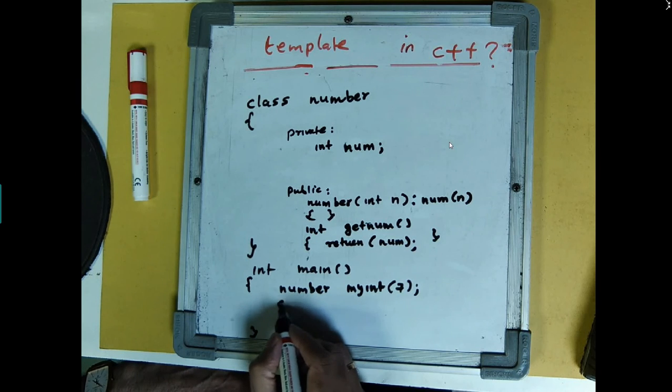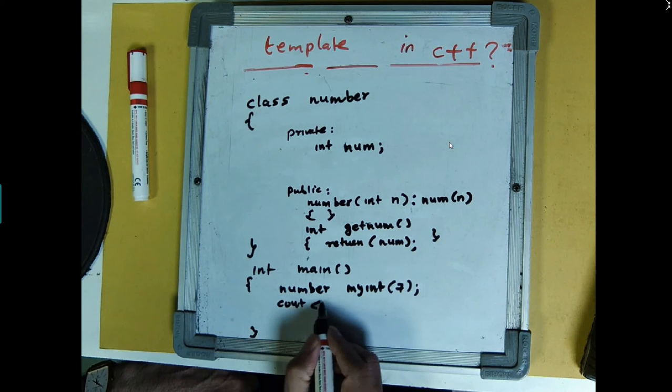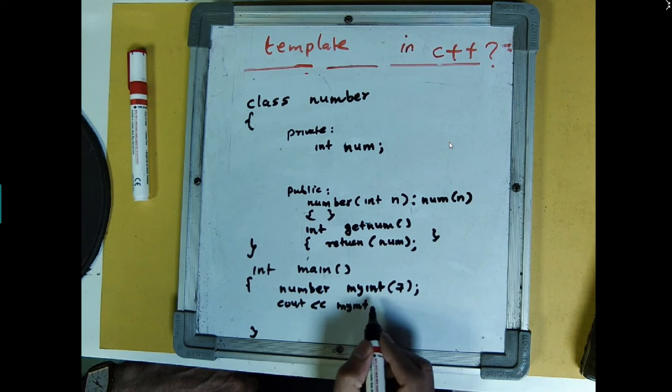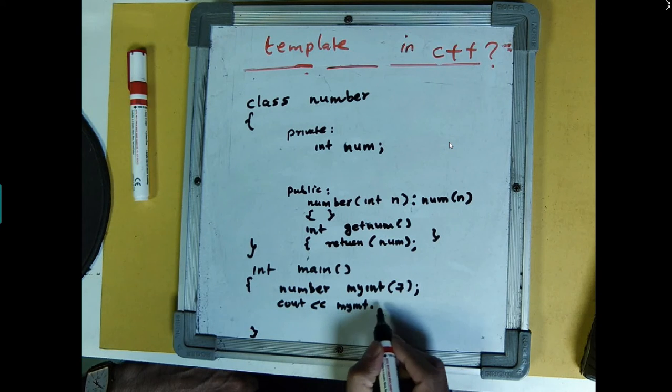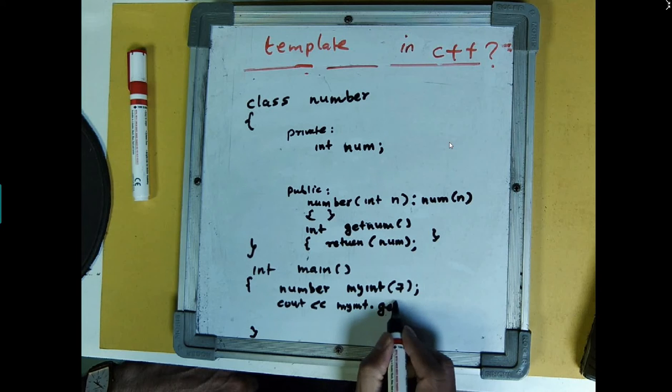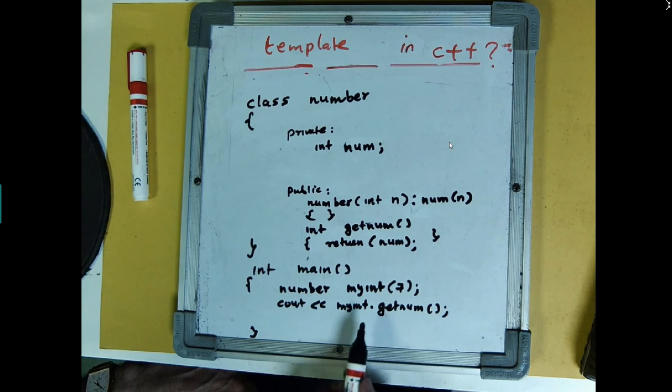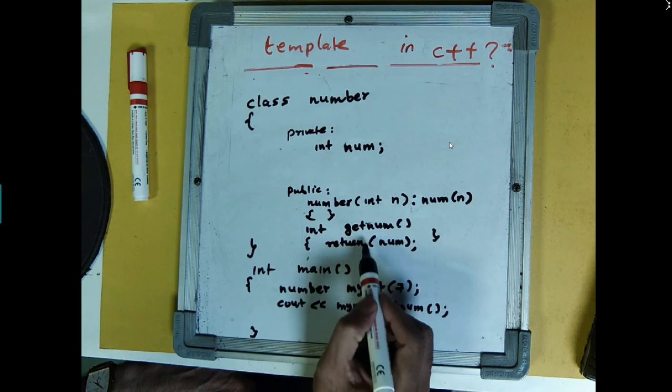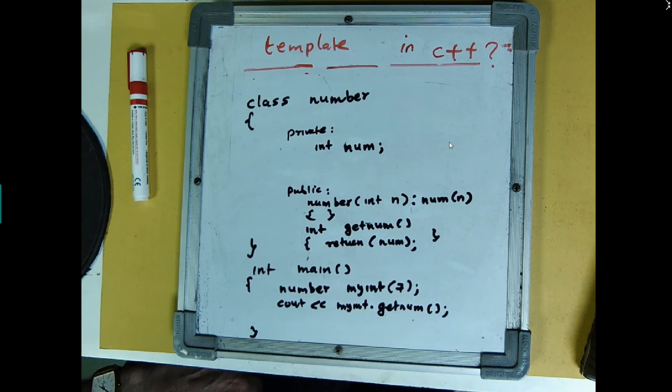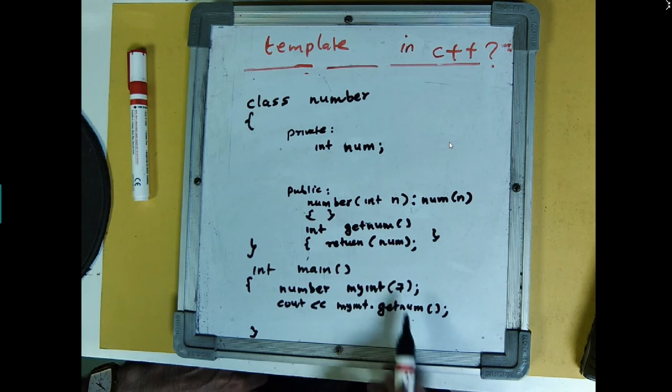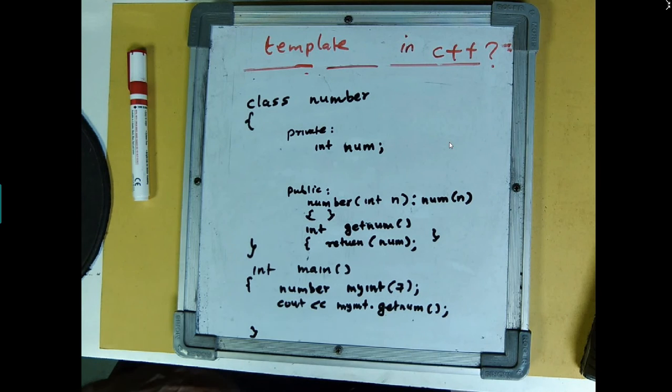After that, now if I print cout, my integer dot getNum, it will always call this function and return the number, the number what has been passed as 7, and it will print 7.